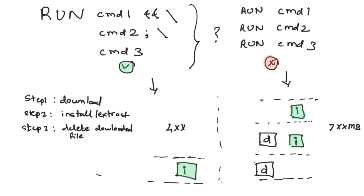Apart from disk size impact, another consideration is the total number of layers in an image, which is capped at 127. From research, this is due to the overlay filesystem that Docker uses, which has a limit of 127. That's another reason to combine RUN instructions and keep in mind while writing your Dockerfiles.